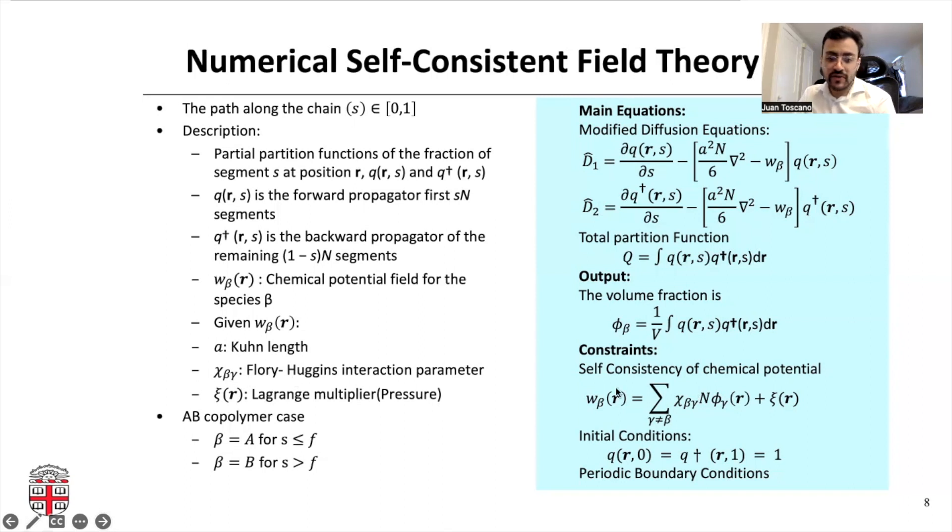This whole process will be constrained by the self-consistency of chemical potential. You can see here that we have this Flory-Huggins interaction parameter, which is one of the things we are going to try to get in the inverse problem. We're also going to subject this to some initial conditions and periodic boundary conditions.